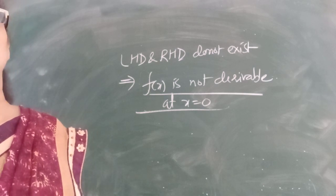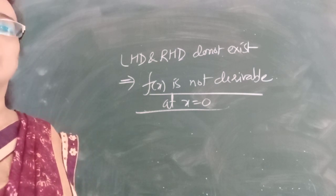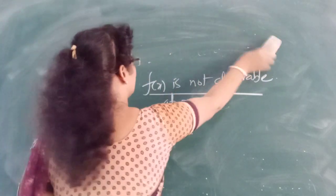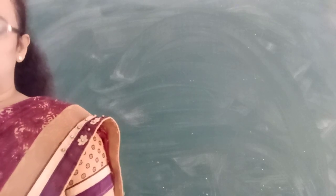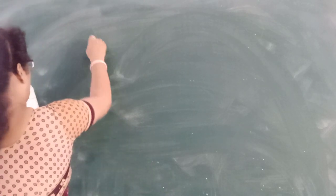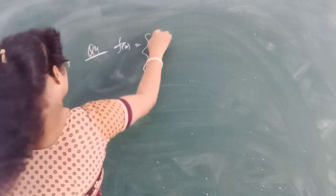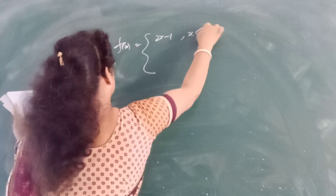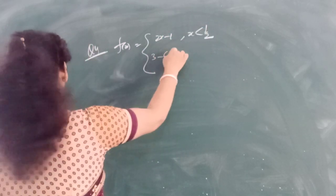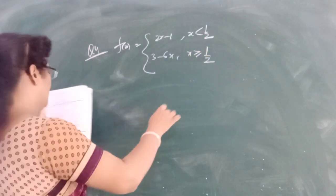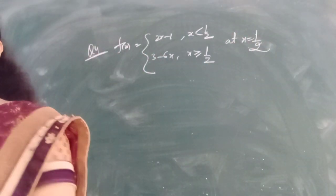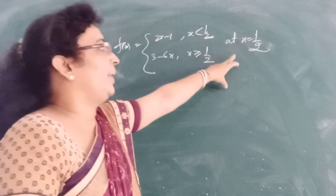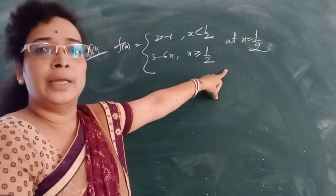Now let us take question number 4. The statement is: f(x) = 2x − 1 if x < 1/2, and f(x) = 3 − 6x if x ≥ 1/2. We need to check whether or not this function is differentiable at x = 1/2.